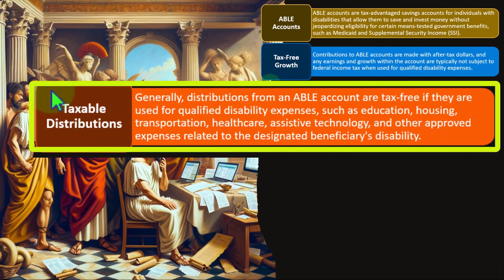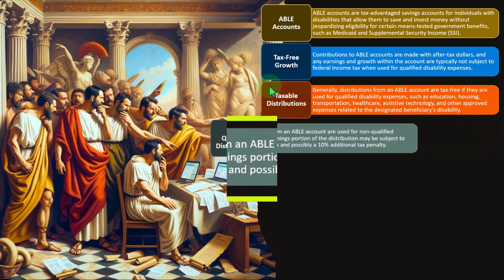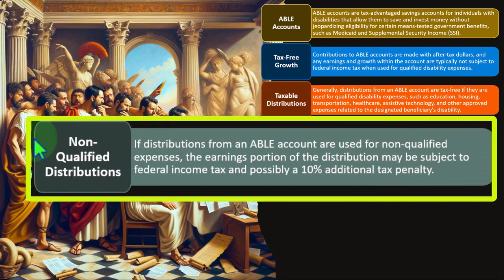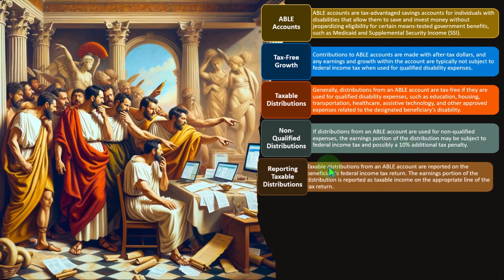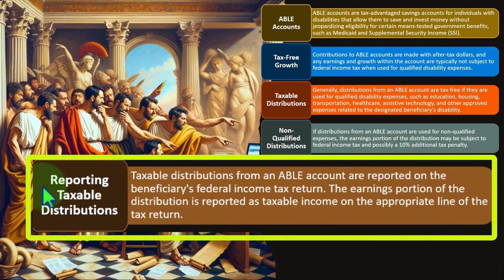Taxable distributions: generally, distributions from an ABLE account are tax-free if used for qualified disability expenses such as education, housing, transportation, healthcare, and assistive technology. Non-qualified distributions — if distributions are used for non-qualified expenses, the earnings portion may be subject to federal income tax and possibly a 10% additional tax penalty, similar to pulling money out early from an IRA.